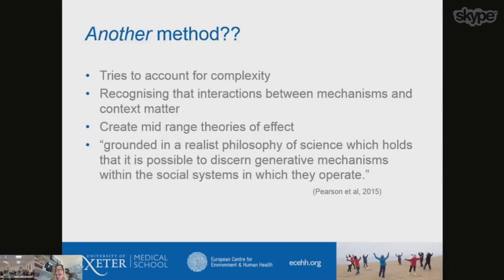A mid-range theory is somewhere between the nuts and bolts daily stuff and the grand theories of everything. It has to be something which is explanatory and slightly abstracted, but also needs to be quite close to the data. According to Mark Pearson and colleagues, realist approaches are grounded in the realist philosophy of science, which holds that it is possible to discern generative mechanisms within the social systems in which they operate. We're not looking at pure positivist ideals about what works — social systems are potentially very important aspects of why something becomes successful or not. So it does have a different epistemological and ontological background.